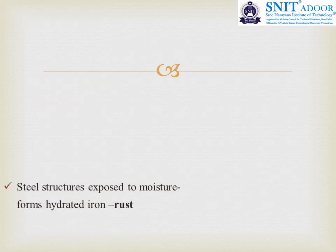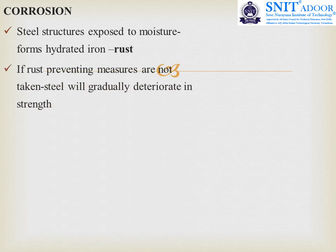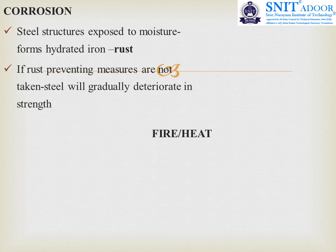Moving on to corrosion. As we discussed in RCC structures as well, corrosion is an important cause of failure in steel structures. Steel structures when exposed to moisture form hydrated iron, which we commonly call rust. If rust-preventing measures are not taken, steel will gradually deteriorate in strength.